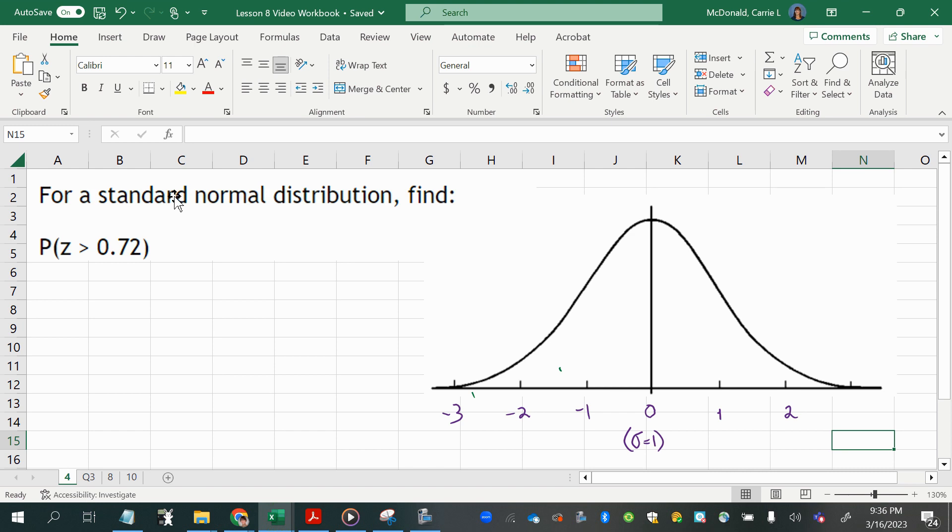So a standard normal distribution, well first of all, a normal distribution is bell-curved, but the standard normal distribution is a bell curve that is special. It has a mean of 0 and a standard deviation of 1, as I've noted here.